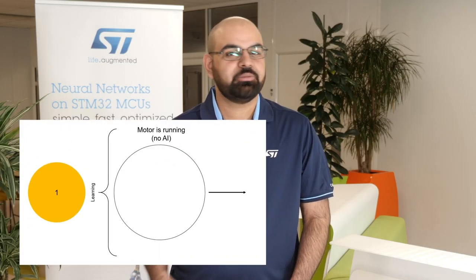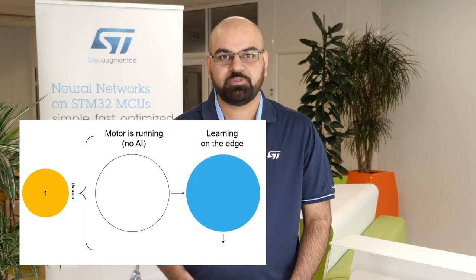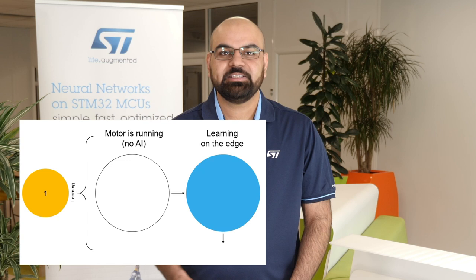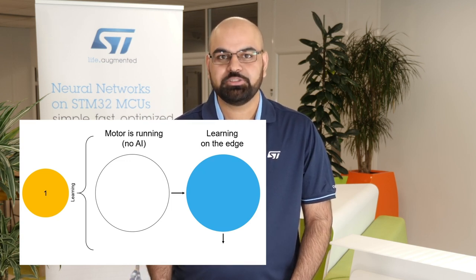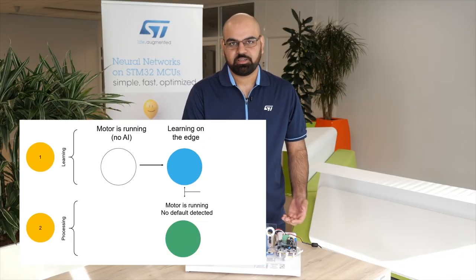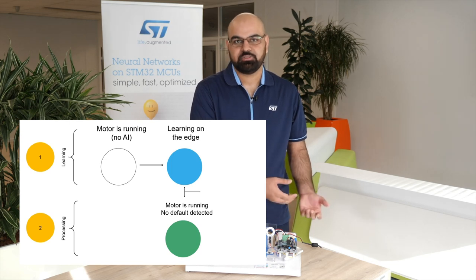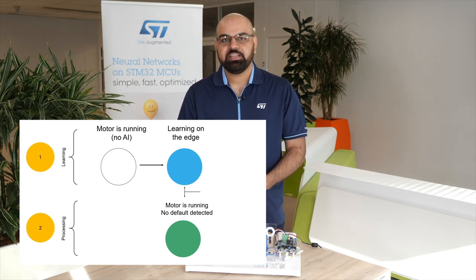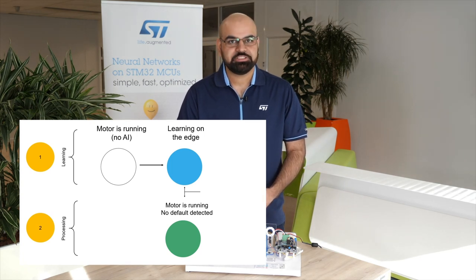The first step is to run the motor in a predefined sequence. Once the motor is running, the second step is to perform the on-device learning. This helps us to fine-tune and individualize our solution for every single motor. After the learning has been performed and we have learned the normal behavior of the motor, we can start performing the condition monitoring in the third phase. In this phase we continuously observe if the motor is running in normal or abnormal condition.